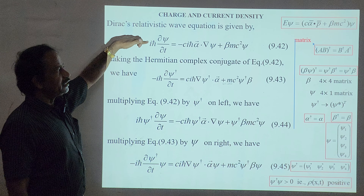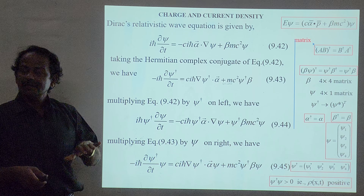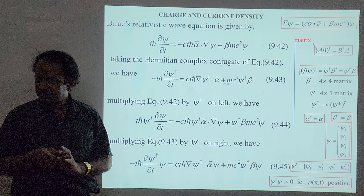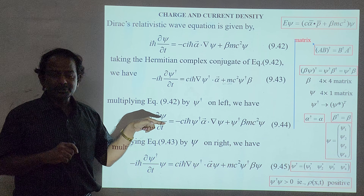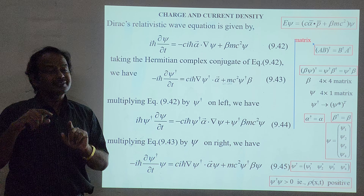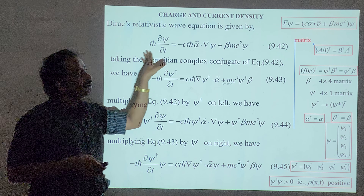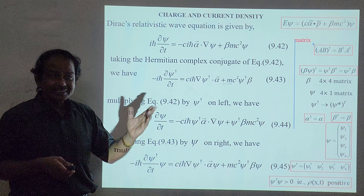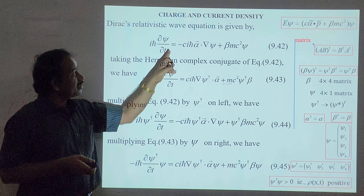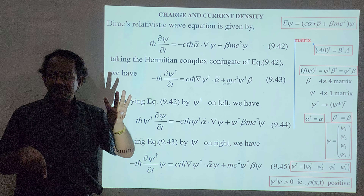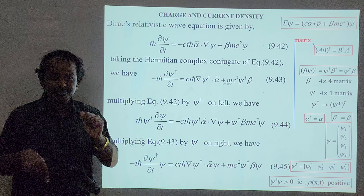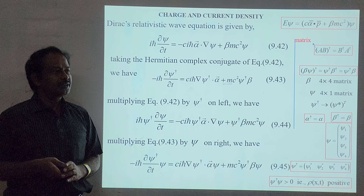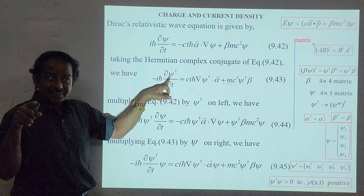In the non-relativistic equation, taking the complex conjugate converts ψ to ψ*. But in Dirac's equation, since everything is in terms of matrices — alpha and beta are matrices, so psi must be a matrix (a column vector with components ψ₁, ψ₂, ψ₃, ψ₄, corresponding to the four energy solutions E⁺ and E⁻) — ψ becomes ψ† (psi dagger), the Hermitian conjugate.